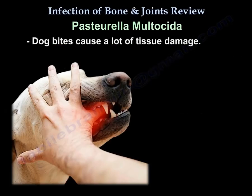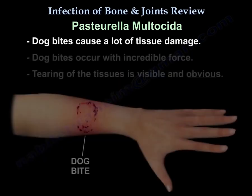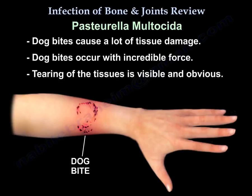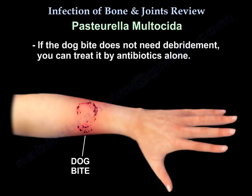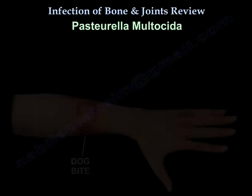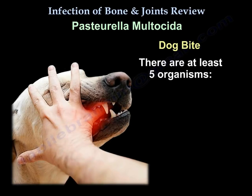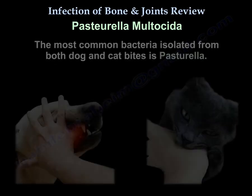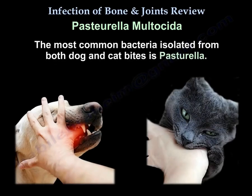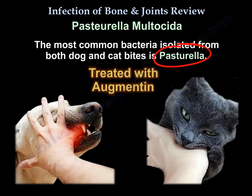The dog really causes a lot of tissue damage — it's not like the small puncture wound of a cat. The force and tearing of tissue from a dog bite is visible and obvious. If the dog bite doesn't need surgical treatment, you can treat it with antibiotics alone. The key organism is Pasteurella multocida, and the treatment is Augmentin.